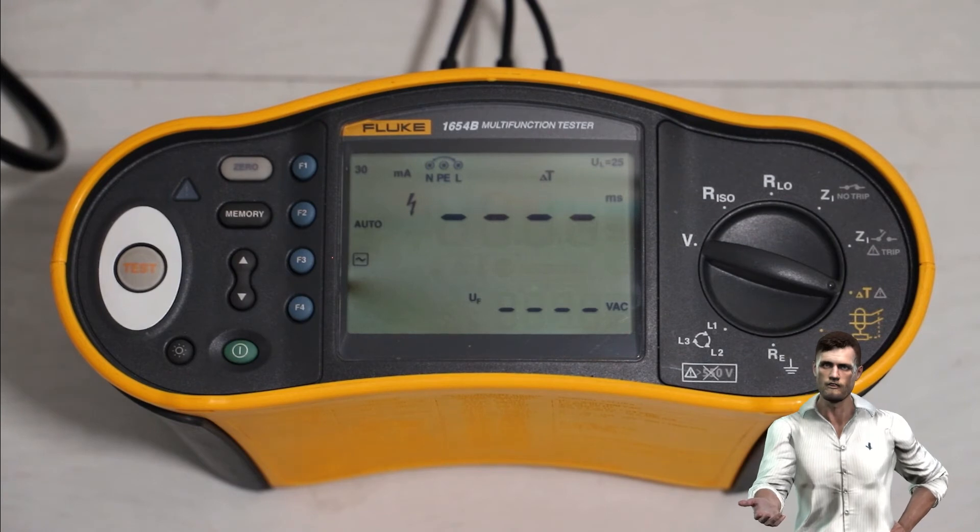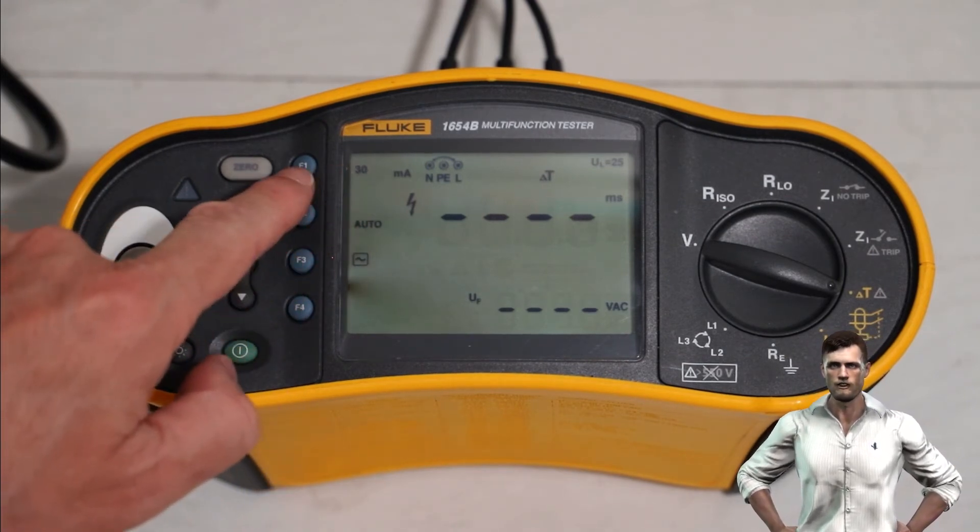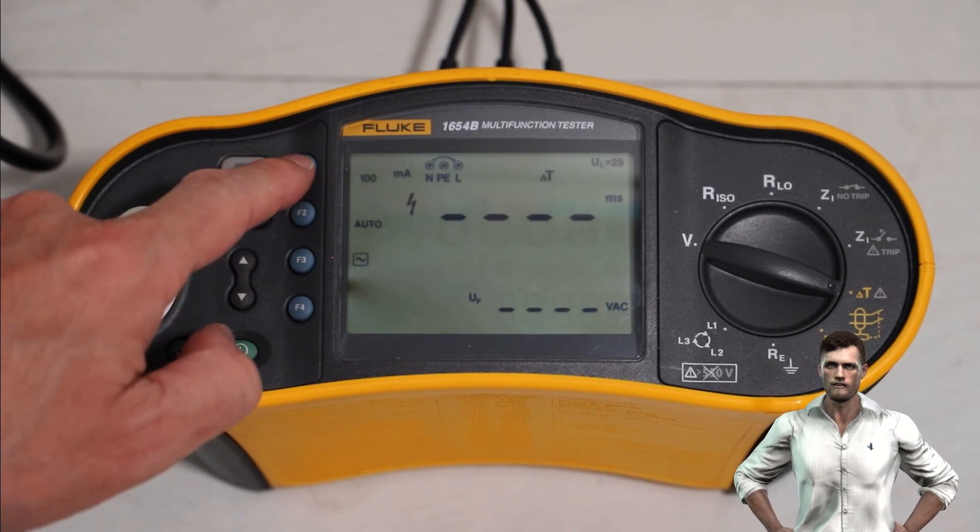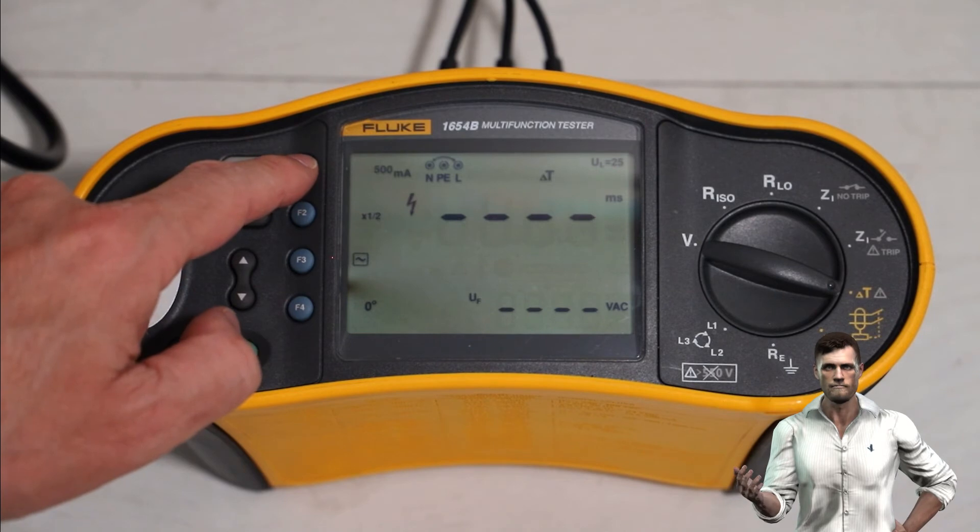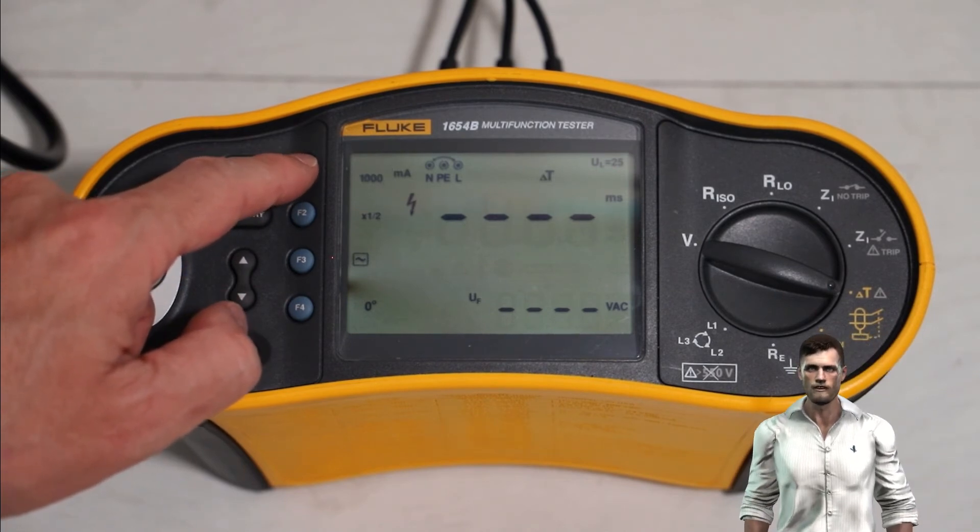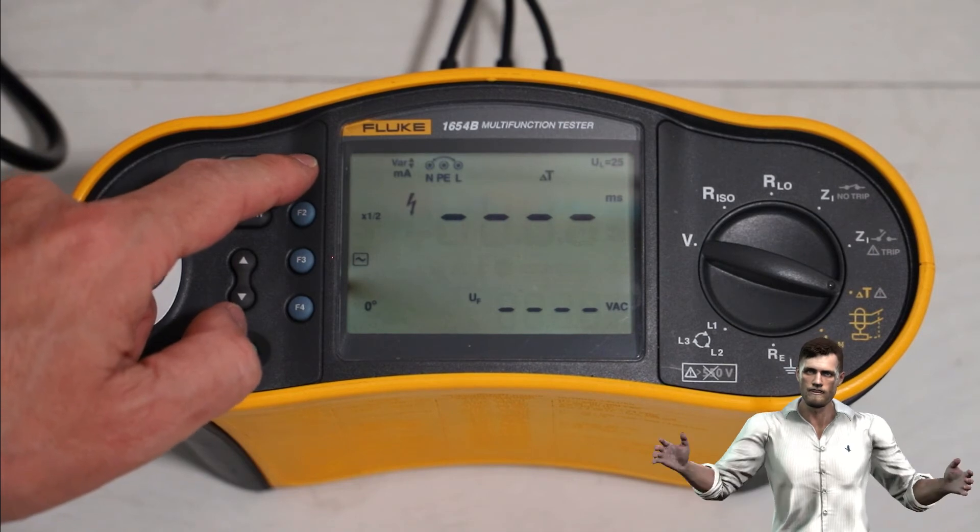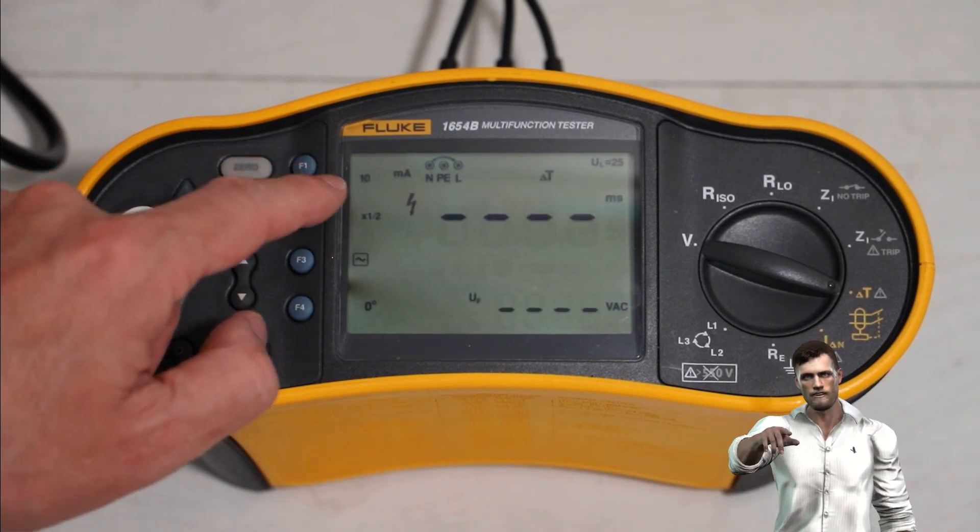With F1, we can select the nominal leakage current of the differential protection between standard values such as 10 milliamps, 30 milliamps, 100 milliamps, 300 milliamps, 500 milliamps, 1000 milliamps or if we wish, we can configure a custom value. In this case I am going to test a typical 30 milliamp differential protection present in many houses.